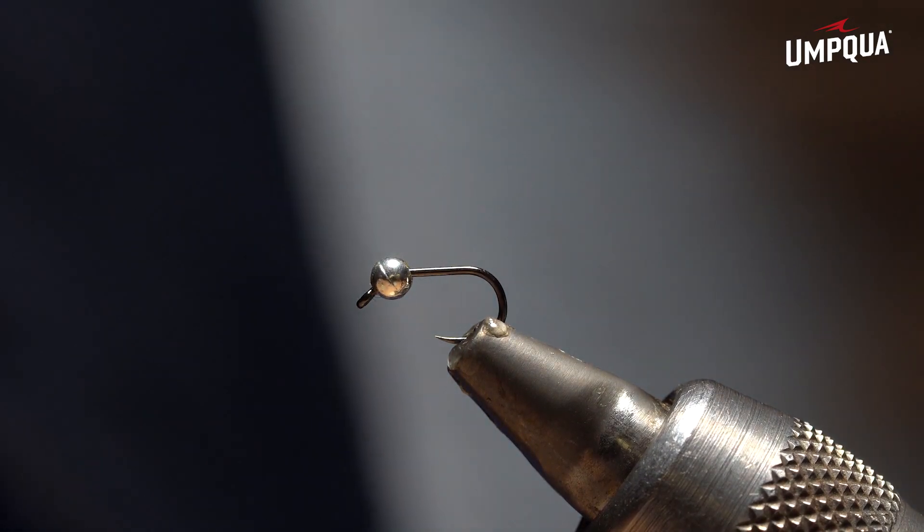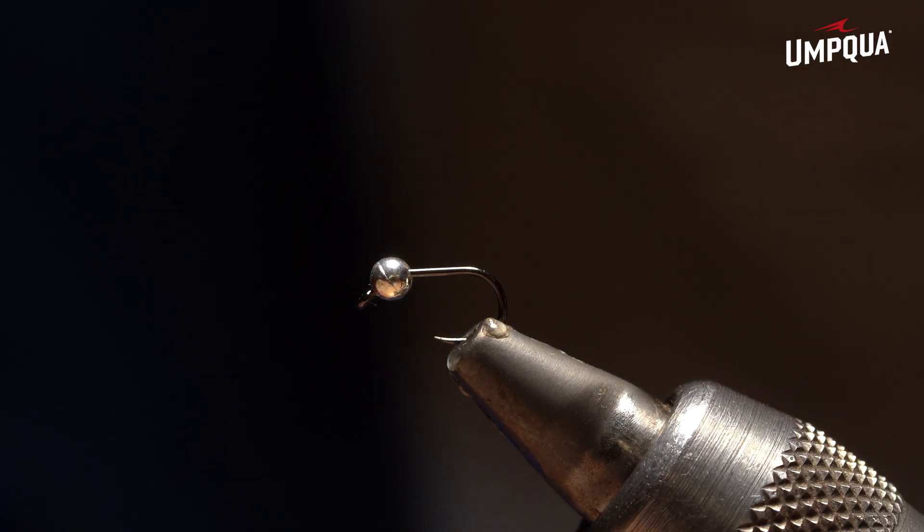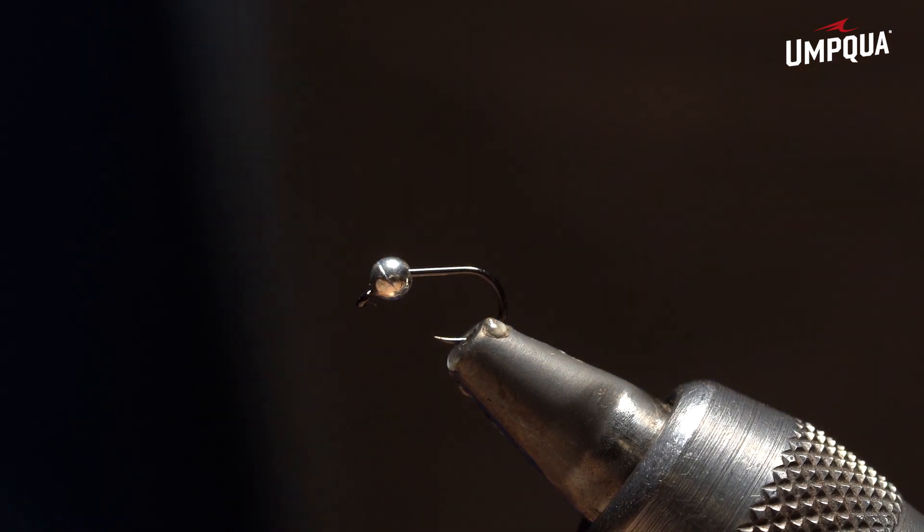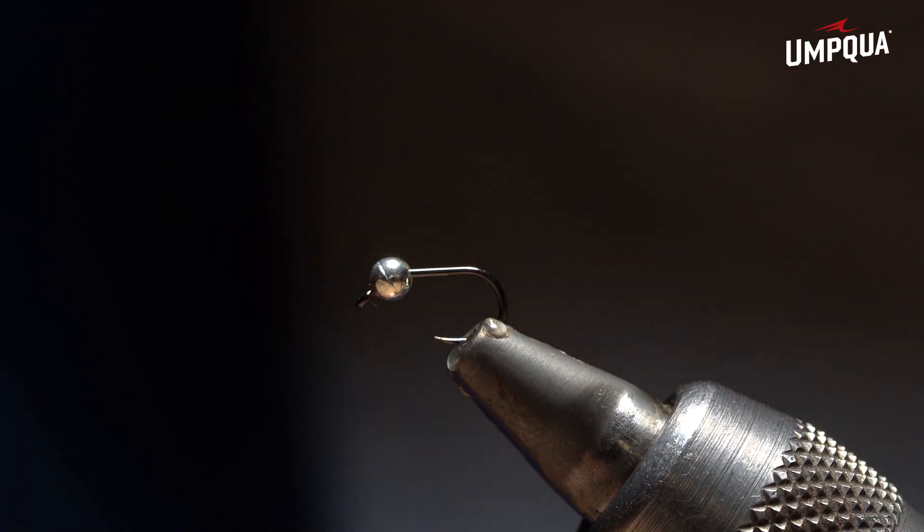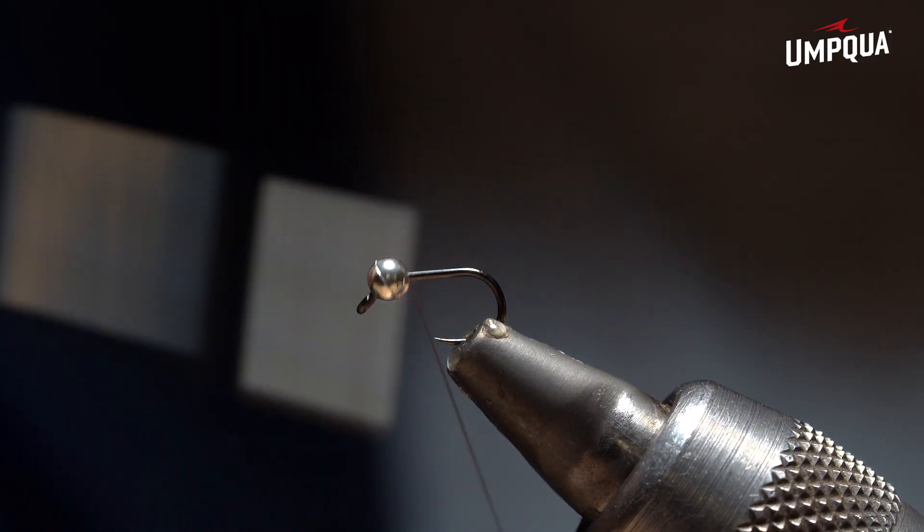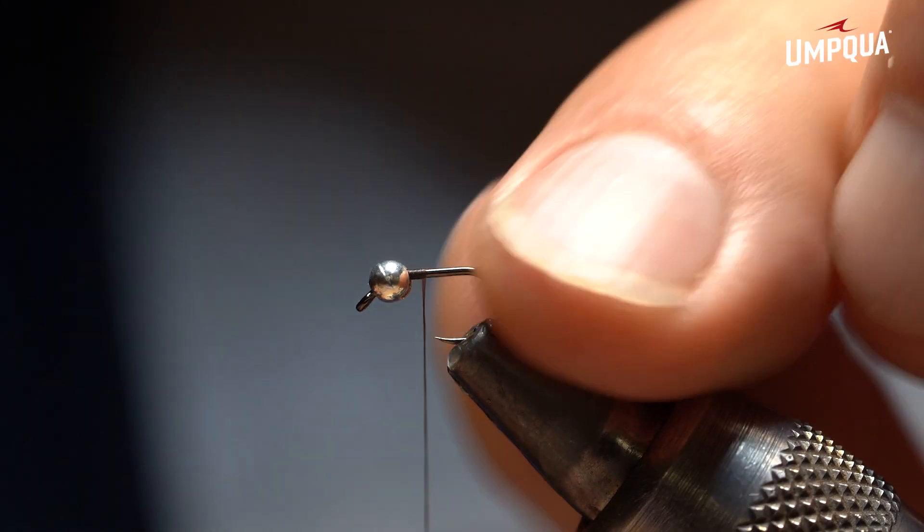This is a size 16 hook, so perfect for the kind of flies I can tie. I'm going to start with a small basic pheasant tail. It's a fly that a lot of people don't think about when you think about jig hooks, even in these small sizes.